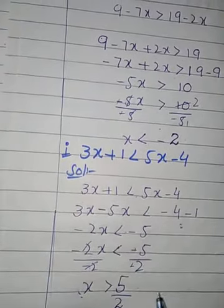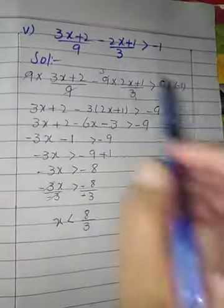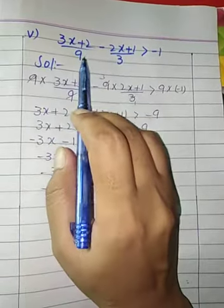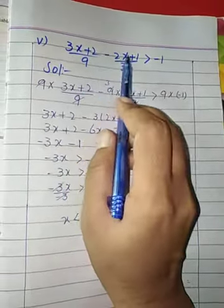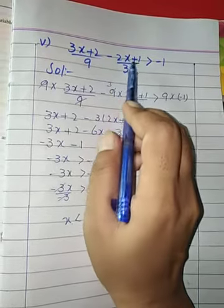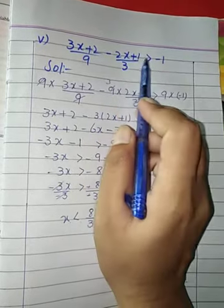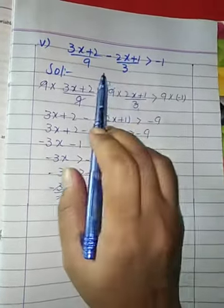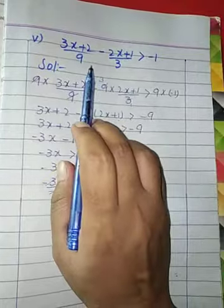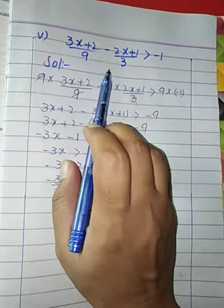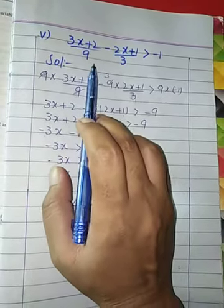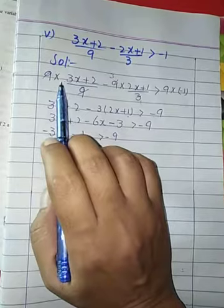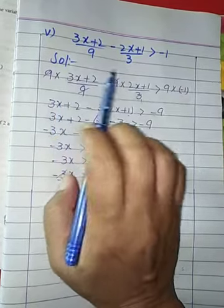Our next question is: 3x plus 2 divided by 9, minus 2x plus 1 divided by 3, greater than minus 1. First of all we will find the LCM. Our LCM is 9. Now multiply by 9 on both sides.